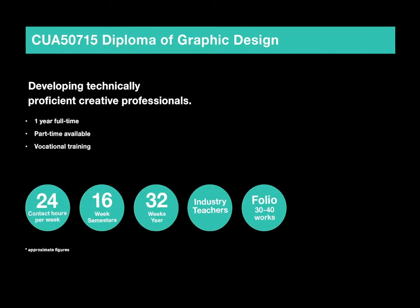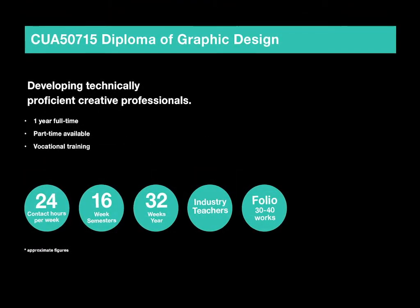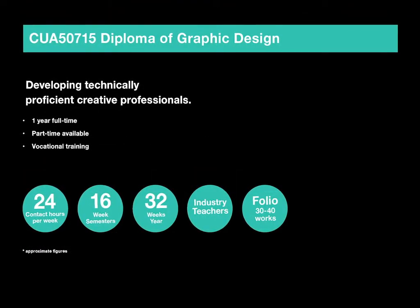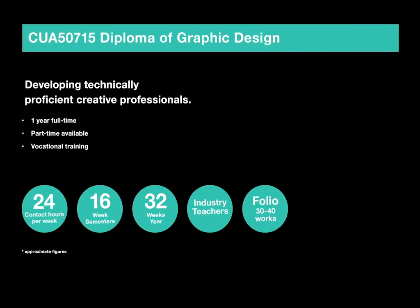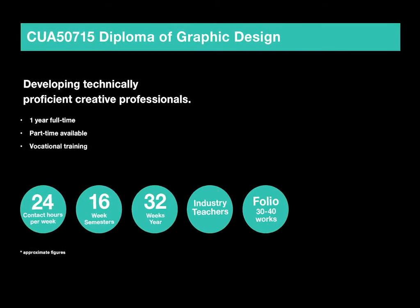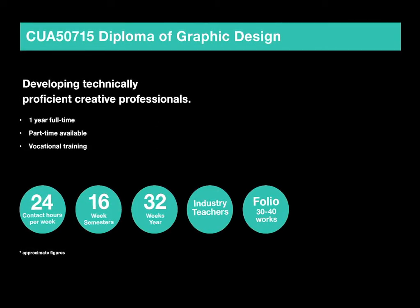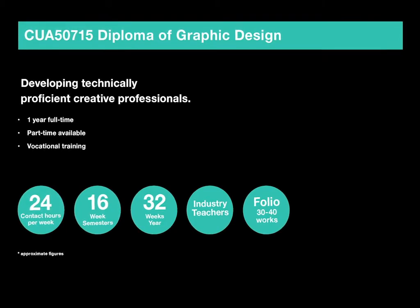We're a one-year full-time course but part-time is available if you choose. If you are choosing part-time you can pick and choose as much or as little as you'd like to study. However, if you're trying to achieve the full diploma within two or three years then we like to sit with you and work out which classes go well together, because some fit nicely with each other and some can be completed standalone.